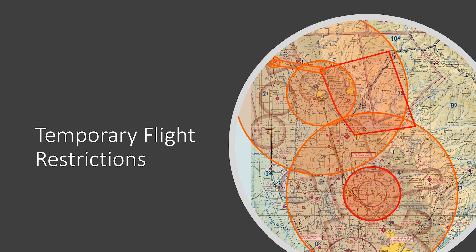The other thing we really need to watch for is temporary flight restrictions, or TFRs. These can pop up anywhere — in Colorado the most common ones are due to fires. Once a TFR is put up, it is illegal to fly in it. Presidential or VIP TFRs are usually about 30 miles in diameter. You can check current TFRs by going to SkyVector, which I'll show you in a second — it gives you up-to-date temporary flight restriction information.